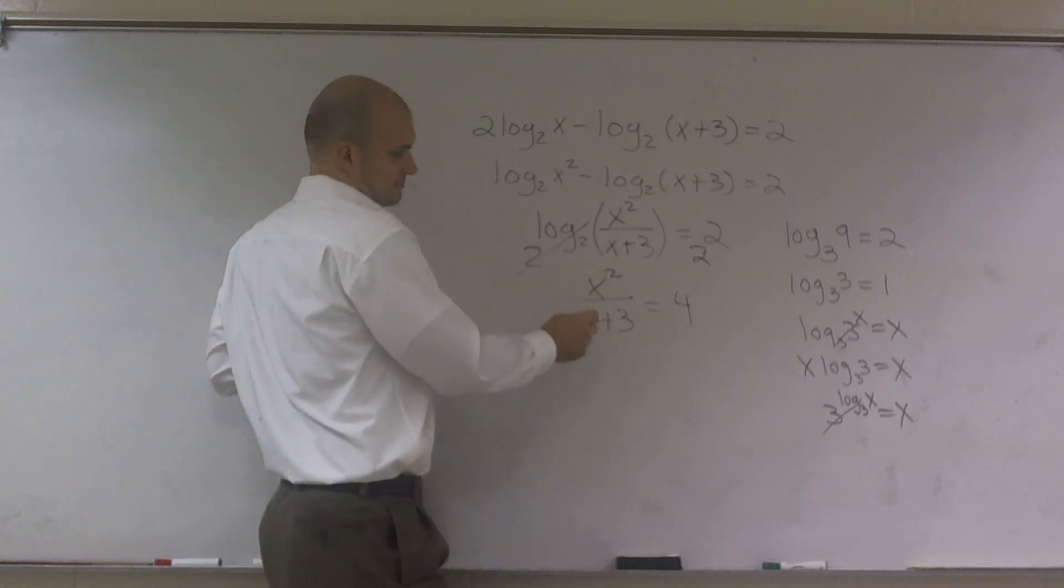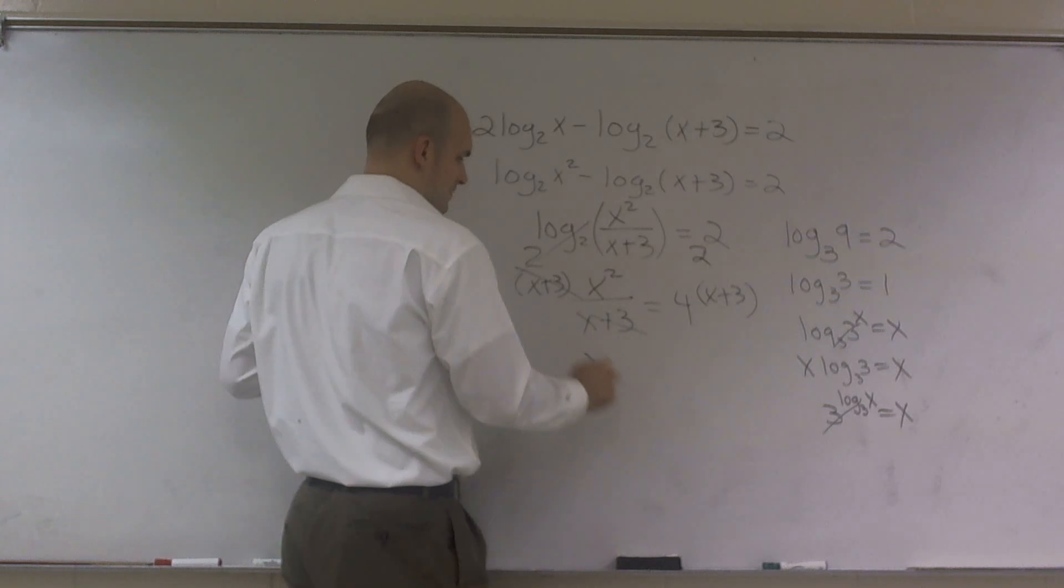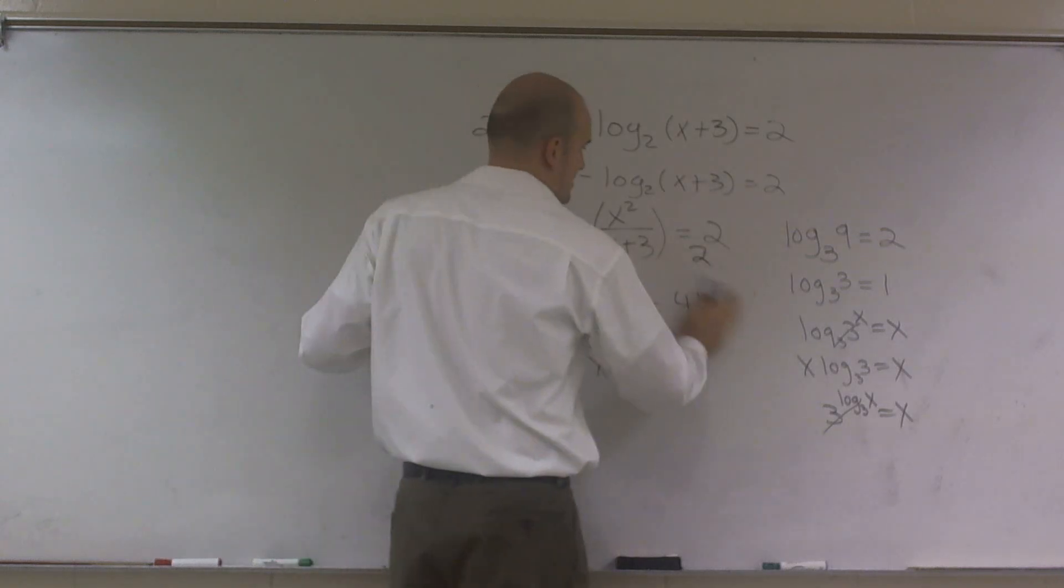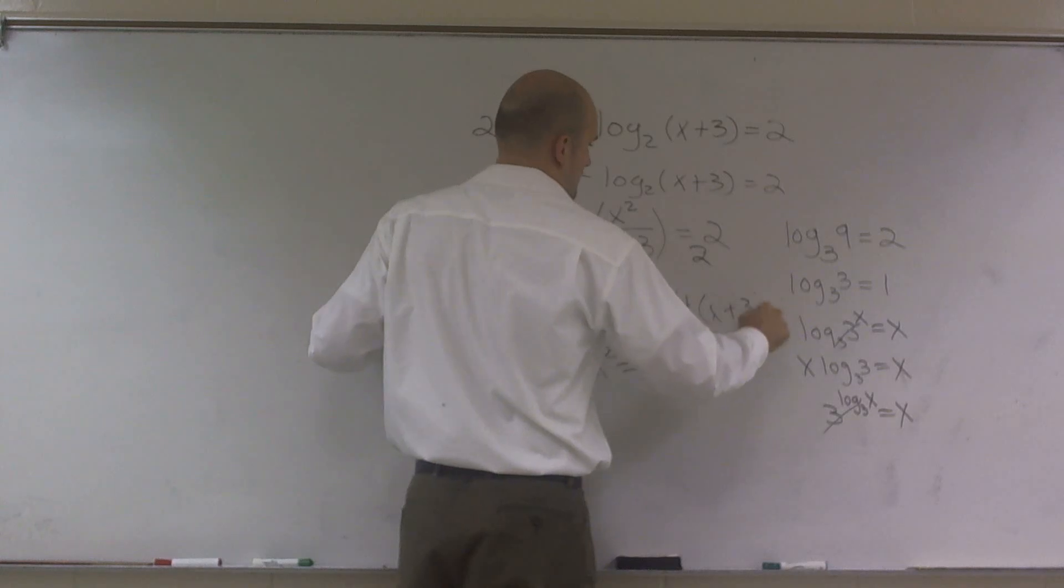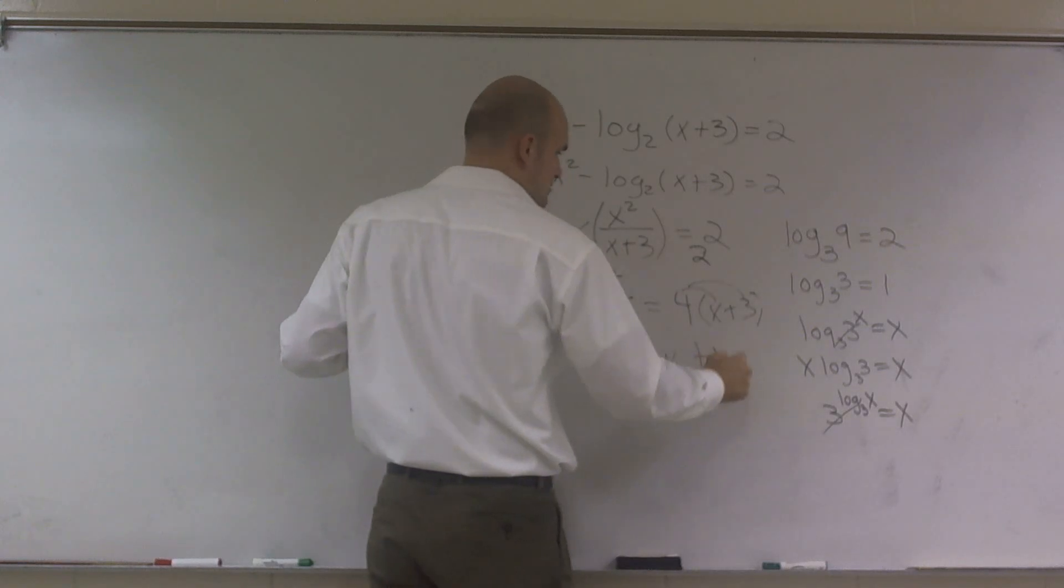So what I need to do to get this off, I need to multiply by x plus 3 on both sides. Therefore, those will cancel out, and I'm left with x squared equals 4 times x. Let's write that a little bit better. 4 times x, as I do distributed property, plus 12.